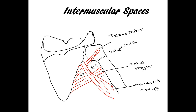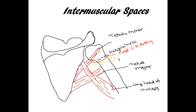Now we will see the contents in these spaces. In the quadrangular space we have the posterior circumflex humeral vessels, or arteries, and the axillary nerve. These two will pass through the quadrangular space.